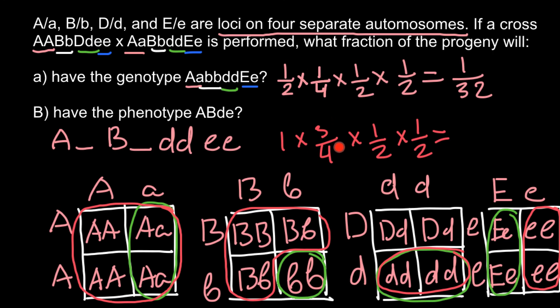The answer is 3 quarters multiplied by one half gives 3 eighths, multiplied by one half gives 3 sixteenths. If you need the answer in percentage form, divide 3 by 16 and multiply by 100. So if we cross these two genotypes, the probability of getting this phenotype in the progeny is 3 sixteenths. And this is all for today — thank you for your attention. Please subscribe, leave a thumbs up if you liked the video, write your comments and questions, and share with your classmates.